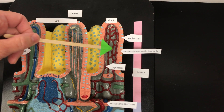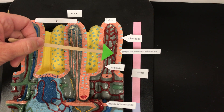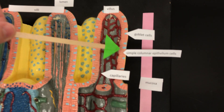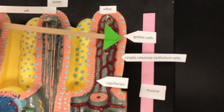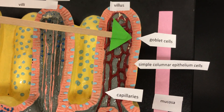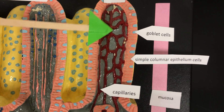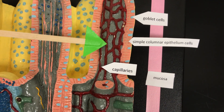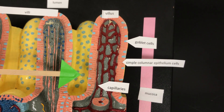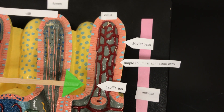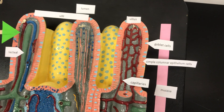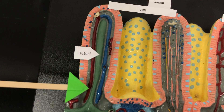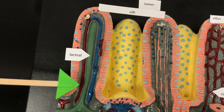The layer next to the lumen is called the simple columnar epithelium, and we also have goblet cells, which are going to produce mucus. The capillaries in the villi are going to absorb nutrients and send them into the bloodstream. The lacteal is the lymphatic vessel and it absorbs dietary lipids.